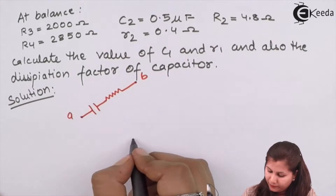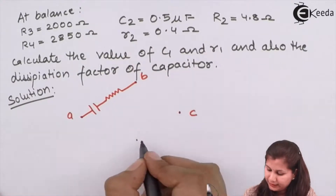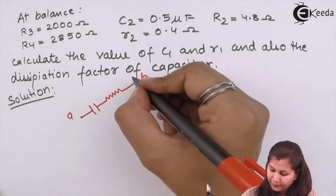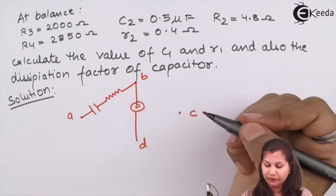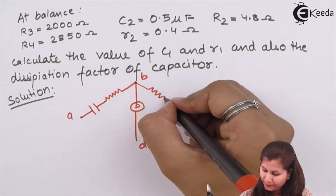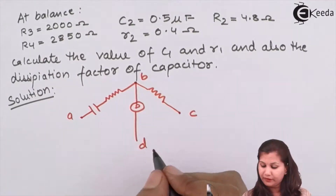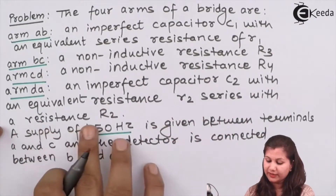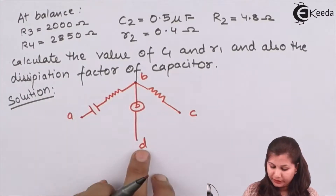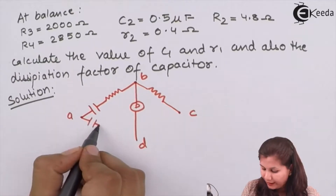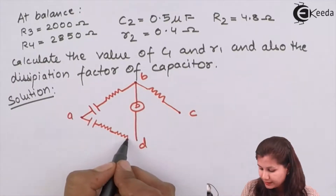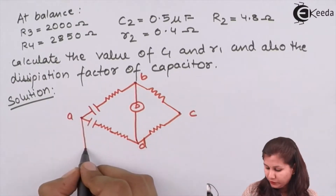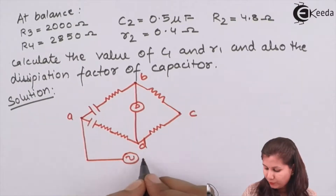The four nodes are A, B, C, and D. Between B and D we have the detector. Arm BC is a non-inductive resistance R3. Arm AD is an imperfect capacitor C2 with an equivalent series resistance small r2 in series with a resistance capital R2. Arm CD is a non-inductive resistance R4. Between A and C we have the AC voltage source.